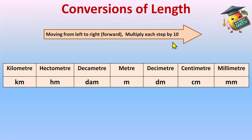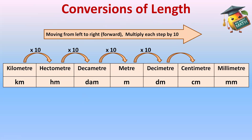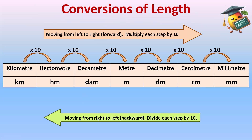When you're converting kilometer to hectometer, you'll multiply it with 10. Again, hectometer to decameter — each step you'll multiply with 10 when you're moving forward, or left to right. And when you're moving from right to left, that is backward, divide each step by 10.